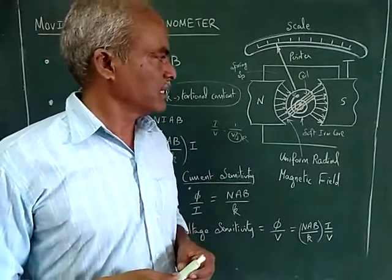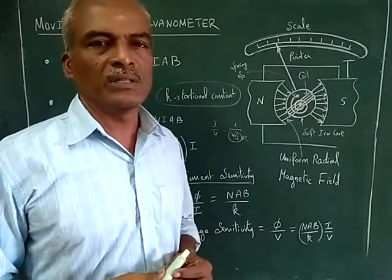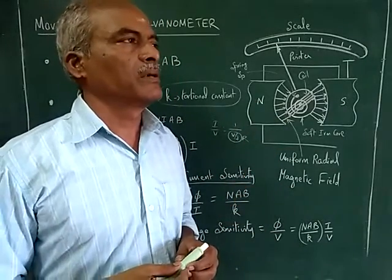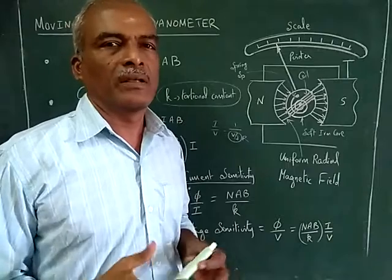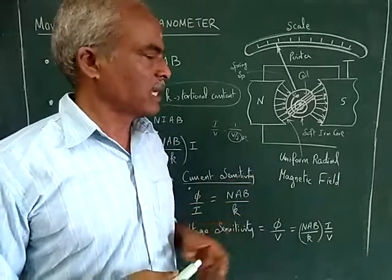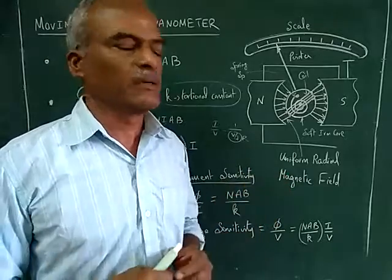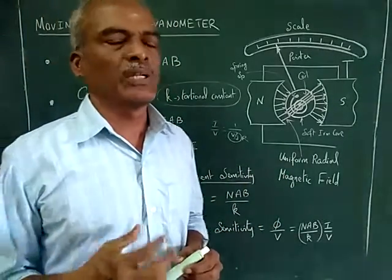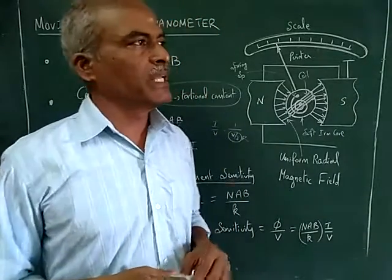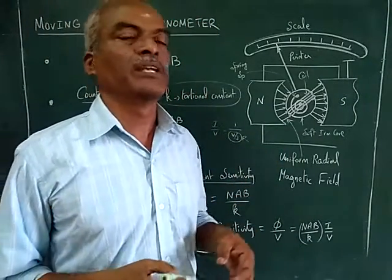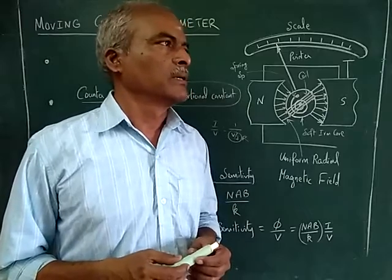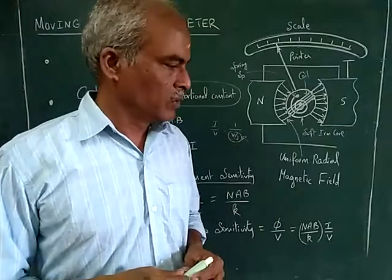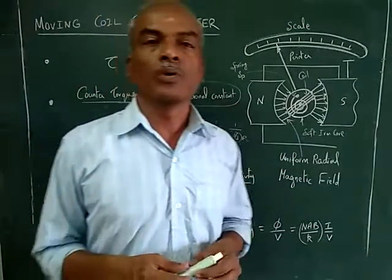The galvanometer finds frequent use in measuring instruments. Based on this galvanometer we can build an ammeter, voltmeter, or ohmmeter. When all are combined into a single unit, we call it a multimeter. This is a basic instrument used in laboratories, though nowadays it has been largely replaced by digital meters, but it is still used in the field. Hope you have understood this topic about the moving coil galvanometer.